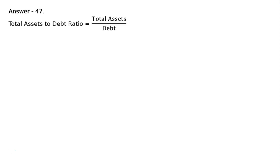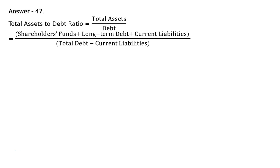Answer 47. The total assets to debt ratio is equal to total assets divided by debt. Total assets equal the totaling of the liability side, which is shareholders funds plus total debt — or long-term debt plus current liabilities.